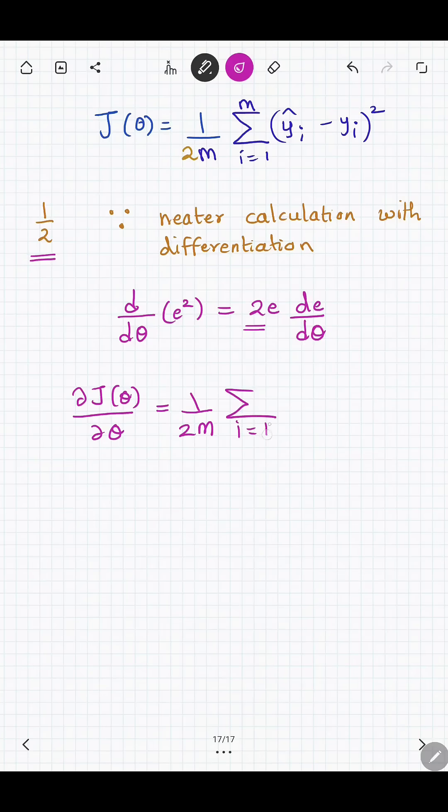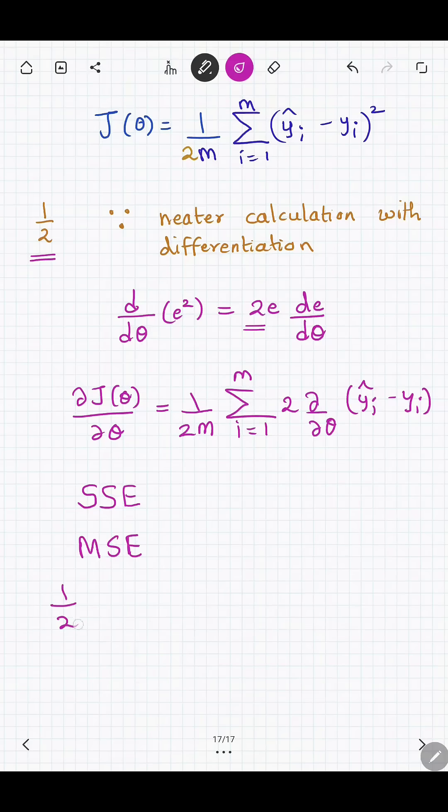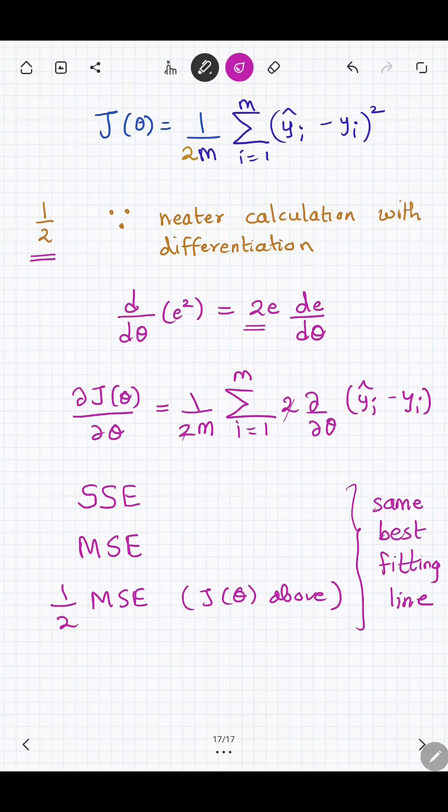So just to conclude, sum of squared errors SSE, mean squared error MSE, and further half MSE all produce the same best fitting line. They differ only by a positive constant scaling.